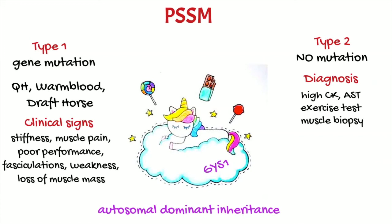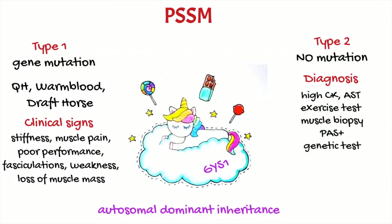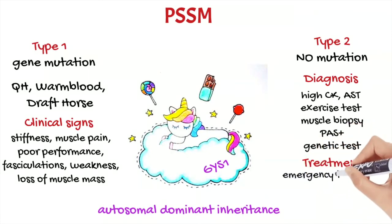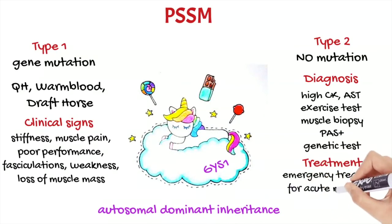Glycogen in muscle fibers will be evident with periodic acid-Schiff stain. For the diagnosis of type 1, there is a genetic test that can be performed on blood, in the DNA or hair roots. For the treatment of acute episodes, you can have a look at one of my previous videos following the link that appears on top.